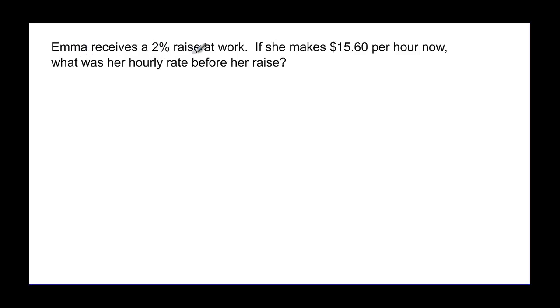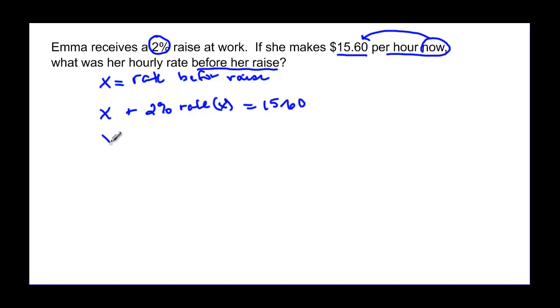Emma has received a 2% raise at work. If she makes $15.60 per hour now, and she had a 2% raise, we want to know what her rate was before her raise. So x is going to be her rate before the raise. If we have a rate before plus the 2% of that rate, that will give us her final of $15.60. So we have x dollars that she started out with plus 0.02 times that x dollars should be equal to $15.60.